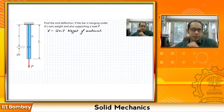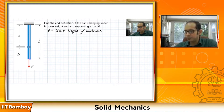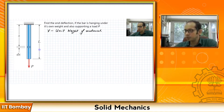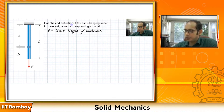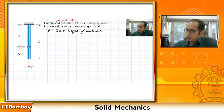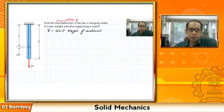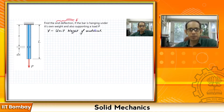Previously we looked at all examples that had no self-weight, and as you can tell, if this bar also has no self-weight, the deflection at the very end is simply going to be PL divided by AE. But now the question is to find the end deflection delta. The bar is hanging under its own weight — gamma is given, which is the unit weight of the material — and in addition it is also supporting this load P at the end.